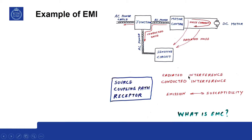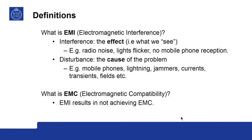You can have radiated interference, conducted interference, emission, and susceptibility. From these terms we can come to what is meant by achieving EMC. What is EMI? It is the interference — the effect that we see or experience, for example radio noise, light flicker, or no mobile phone reception. And what is a disturbance? It is the cause of the problem — for example, mobile phone transmitters, lightning, jammers, currents in circuits, transients, fields, etc.